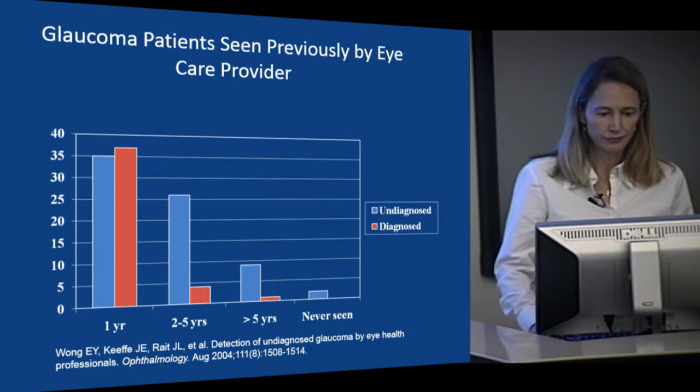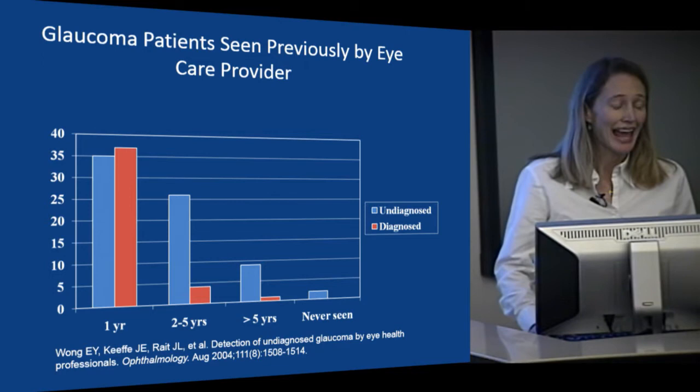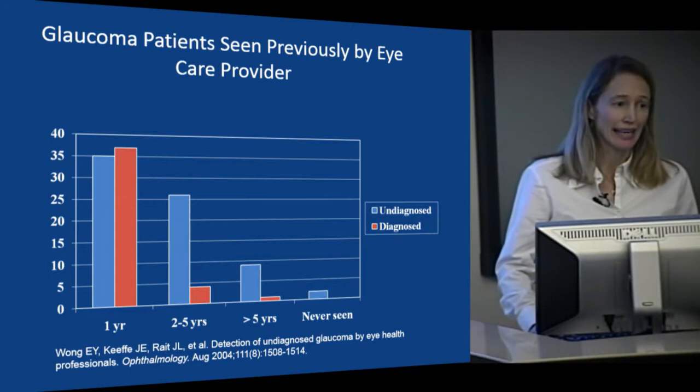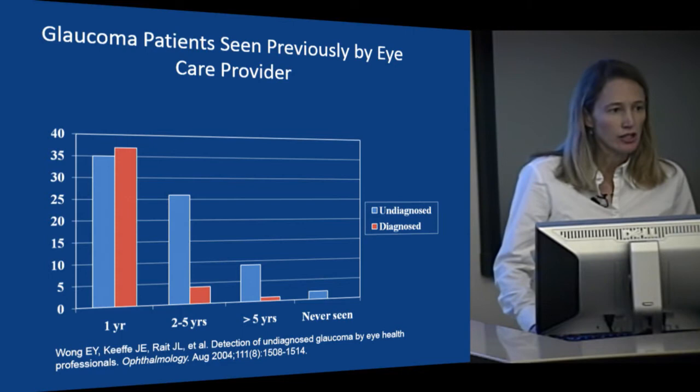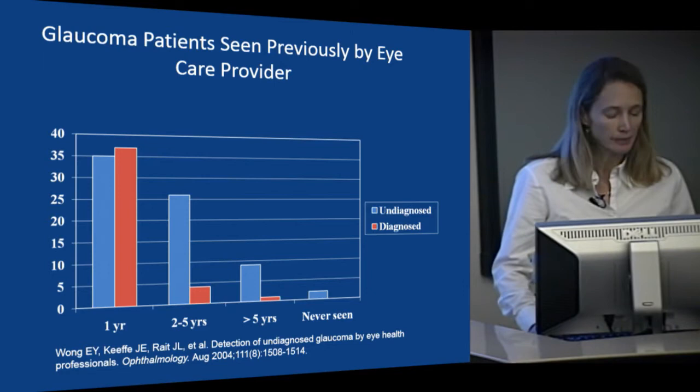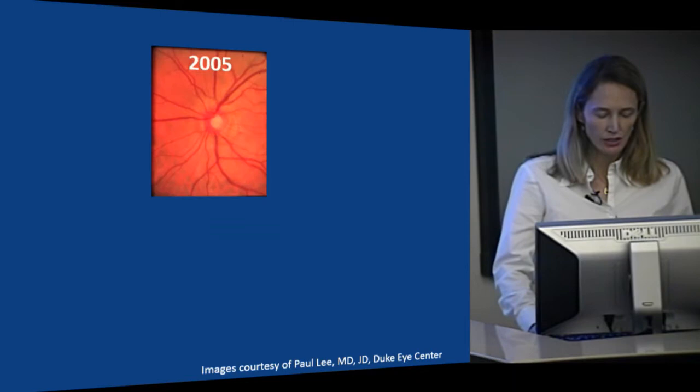We also learned from population-based studies that half of the patients found to have glaucomatous optic nerve head damage on exam didn't know they had glaucoma. Unfortunately, many of these patients who didn't know they had glaucoma had actually seen eye care providers in the past 12 months. So there is a lot of room for improvement, both in our diagnosis of glaucoma and our provider-level education.